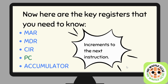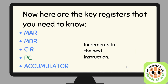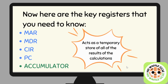The PC, which stands for Program Counter, increments to the next instruction. Every time the computer goes through an instruction, it needs to be prepared to move on to the next instruction — and that's what the PC does. Finally, the Accumulator acts as a temporary store of all of the results that happen in the Arithmetic Logic Unit.